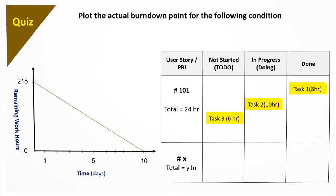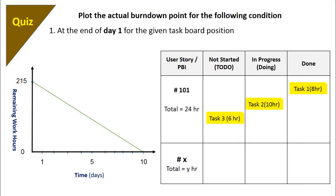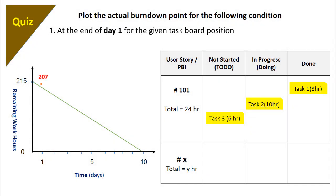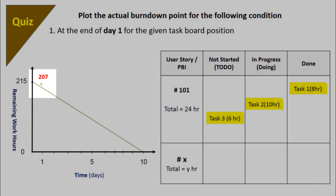On every working day, at the end of the day, the scrum master would check the visual story board then update the burndown chart based on the remaining work. Plot the actual burndown point at the end of day one for the given task board position. Task one worth eight hours is completed, hence we need to plot the remaining work which is 207 hours.